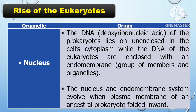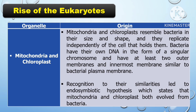In the organelle nucleus, the DNA of prokaryotes lies enclosed in the cell's cytoplasm, while the DNA of eukaryotes is enclosed within the endomembrane system. The nucleus and endomembrane system evolved when the plasma membrane of an ancestral prokaryote folded inward. Mitochondria and chloroplasts resemble bacteria in their size and shape, and they replicate independently of the cell that holds them.